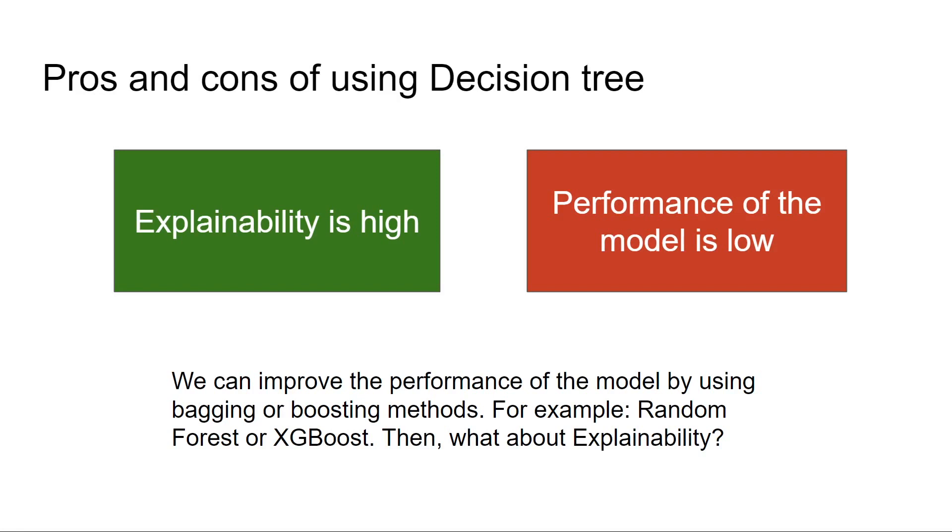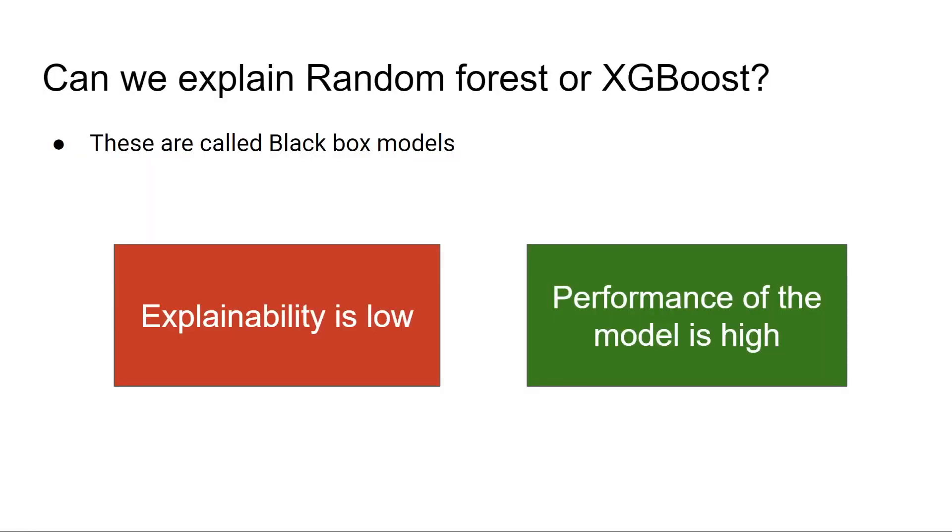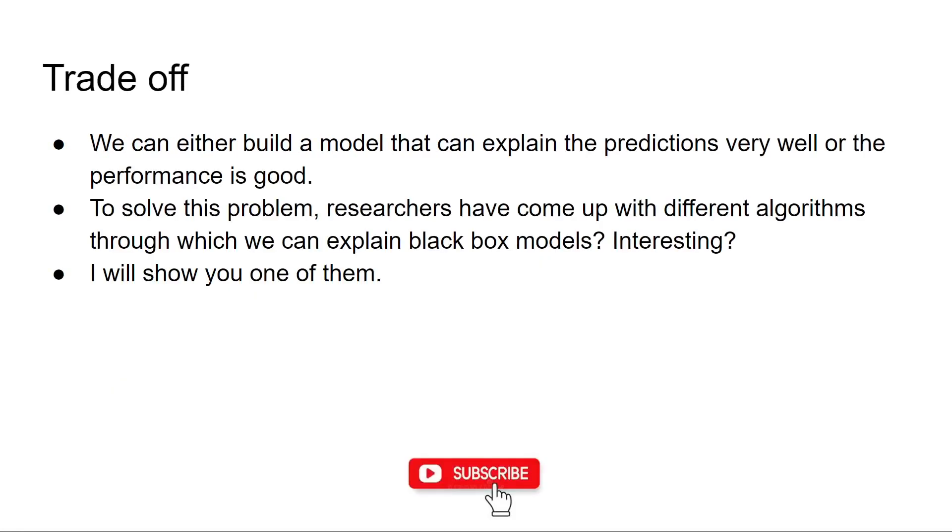But there are ways to improve this model by using bagging or boosting methods, for example, Random Forest or XGBoost. Then what about explainability in this case? In general, we call these black box models. The explainability is low when compared to decision trees, but performance of the model is high. So there is a trade-off between the two.